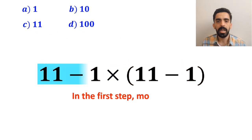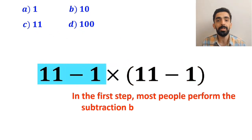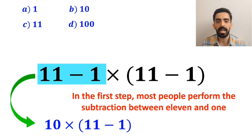In the first step, most people perform the subtraction between 11 and 1, which I have highlighted in blue. So this expression simplifies to 10 × (11 - 1).